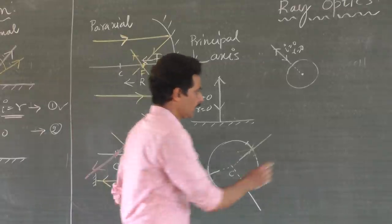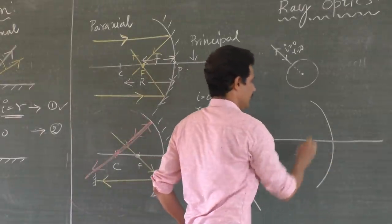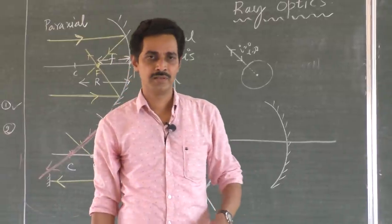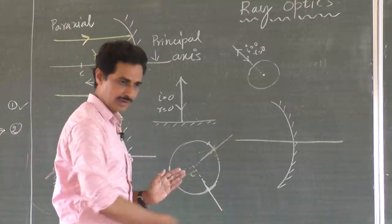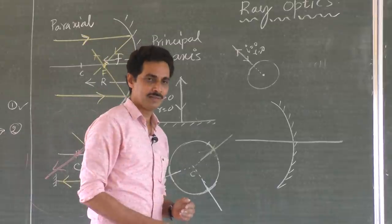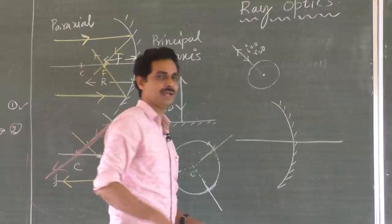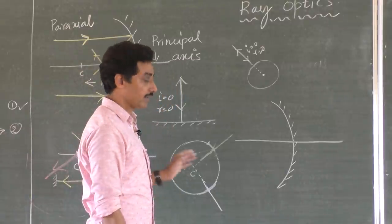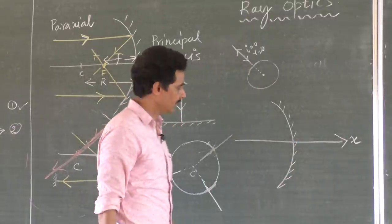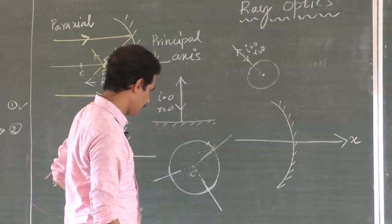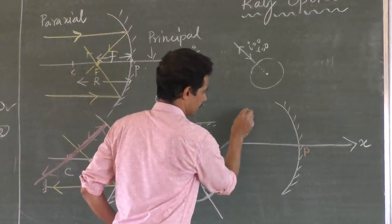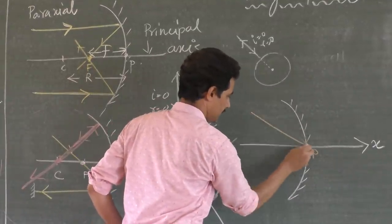Every time you draw ray diagrams, please observe one important thing: I take the ray diagrams with the ray of light traveling from left to right, along the positive x-axis. This helps a lot to analyze all the sign conventions. Let the mirror or lens be placed such that the ray of light from the object travels along the positive x-axis.